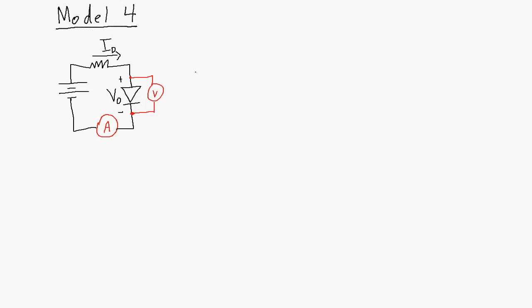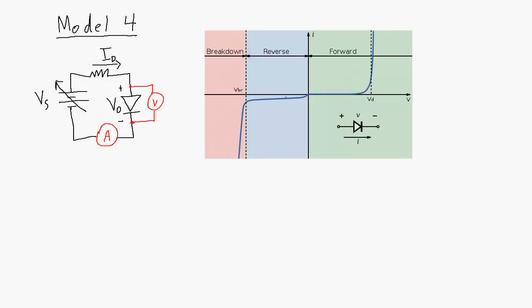Model number four is going to be the most precise model that we have of a diode. I've got this set up here to show you how we could come up with this particular model, using a voltmeter to measure the voltage across the diode and an ammeter to measure the current going through the diode. With a variable voltage source, I would start at zero and then in small steps increase it up to some value, measuring the voltage across the diode and the current through the diode at each step. I'd do the same thing in the negative direction. The result of doing all these measurements would be a graph that looks something like this.